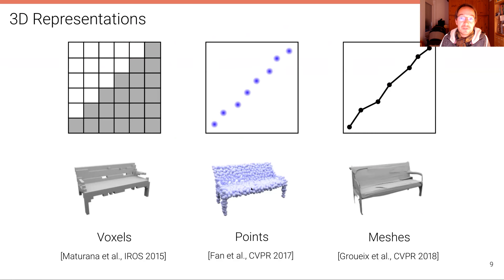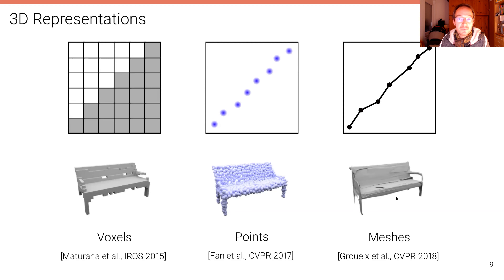Then another representation is point clouds. For example, there's a work called point set generating networks that predicts a set of points from a latent code or some representation encoded from an image. And then there's also meshes — the classical representation used throughout computer graphics — and people have lately also tried to predict meshes.